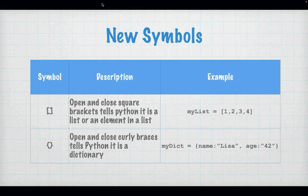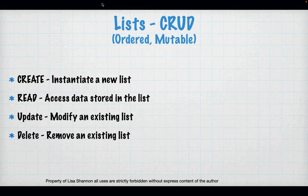The other symbol is open and close curly braces. Open and close curly braces are an indication to Python that it is about to deal with a dictionary. So Python knows, based on the symbols surrounding our data, whether it's supposed to act as a list or as a dictionary.